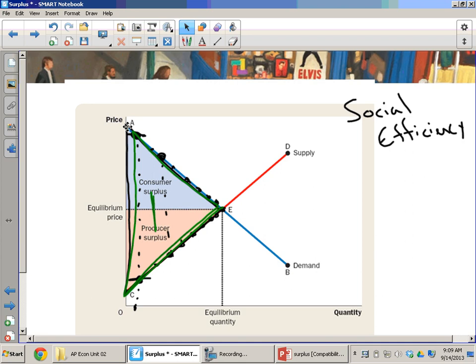Here, we want to look at the basic premise of social efficiency and just say that social efficiency is when total surplus is maximized.